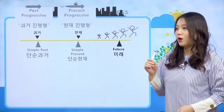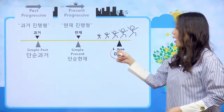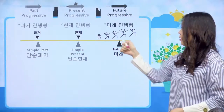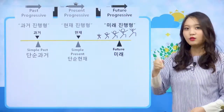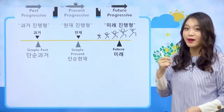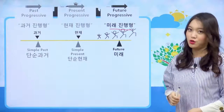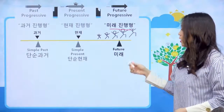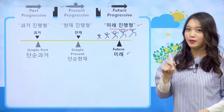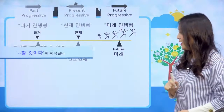예를 들면 나 내일 밥 먹을 거야 하면은 미래 시제지만, 나 내일 한 1시부터 2시 사이에 밥 먹고 있을 거야라고 이야기한다면 미래 진행형이 되겠죠. 그래서 미래도 미래와 미래 진행형이 있는데 오늘 미래에 대해서 한번 살펴보도록 할게요.